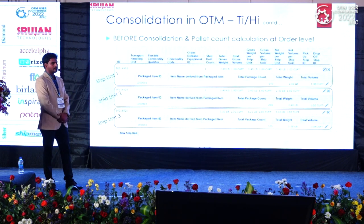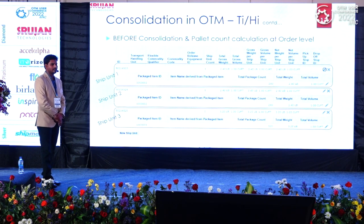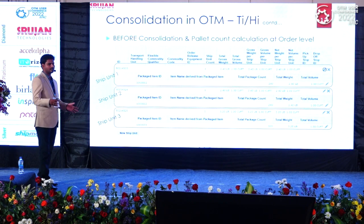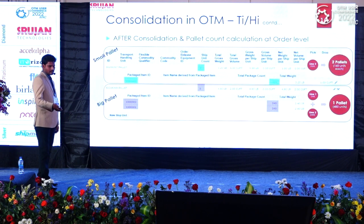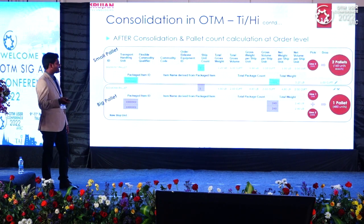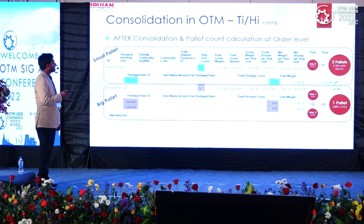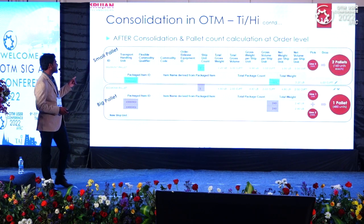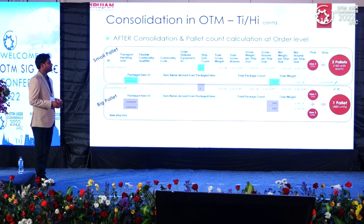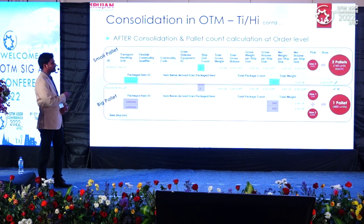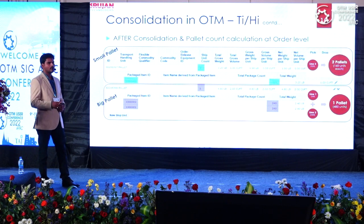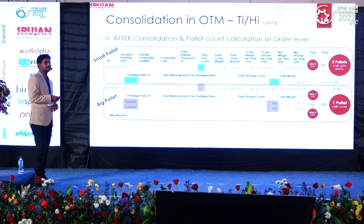Once we create the order without consolidation, by default all three package items go into different pallets. After executing the generate ship unit action — either through workflow or manual action — Line 1 and Line 2 are consolidated into one pallet, and Line 3 is created as a separate pallet with a count of two, since 320 units divided by 160 units per small pallet equals two pallets. The system automatically calculates and consolidates.